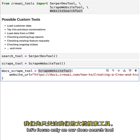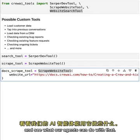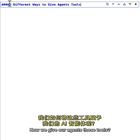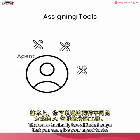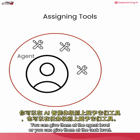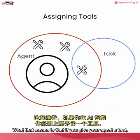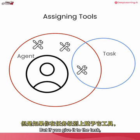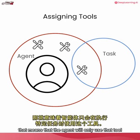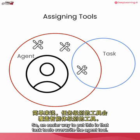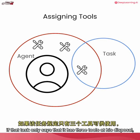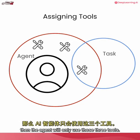There are two ways to give your agent tools: at the agent level or at the task level. If you give a tool at the agent level, it belongs to the agent and can be used for any task. If you give it at the task level, the agent will only use that tool when performing that specific task. Task tools overwrite agent tools — so if an agent has 10 tools but a task specifies only 3, the agent will only use those 3 for that task.